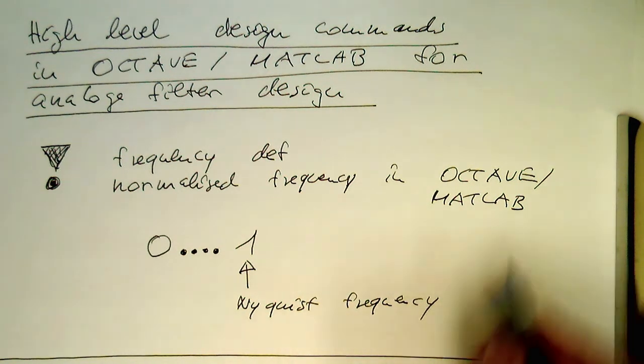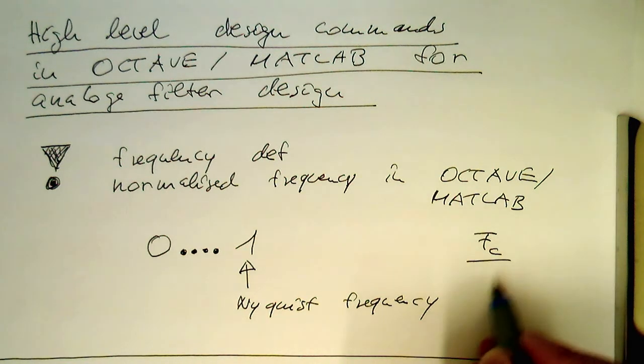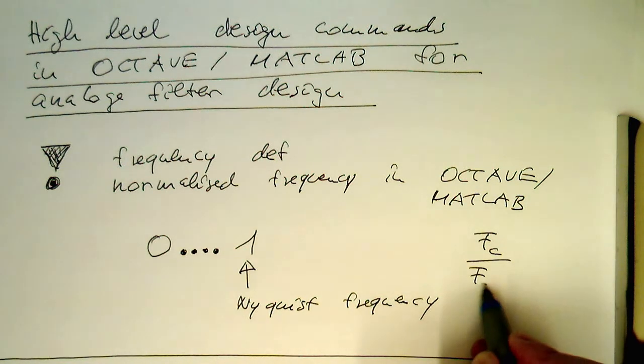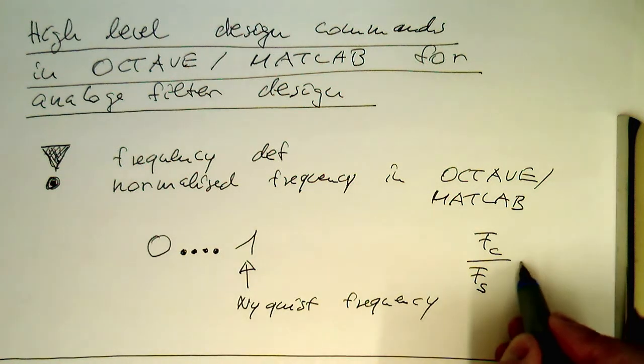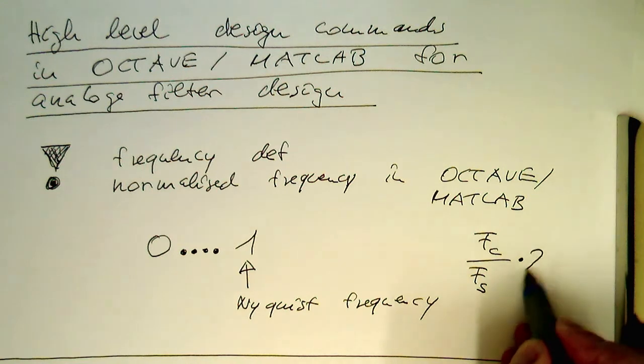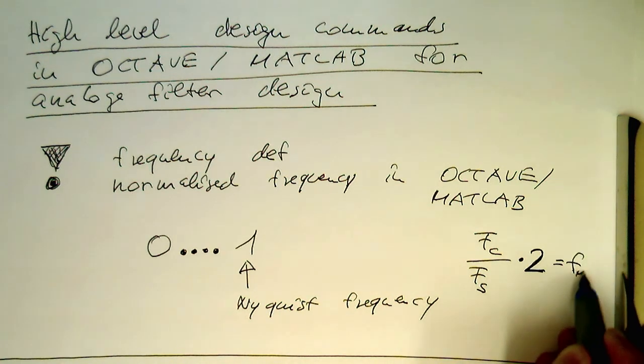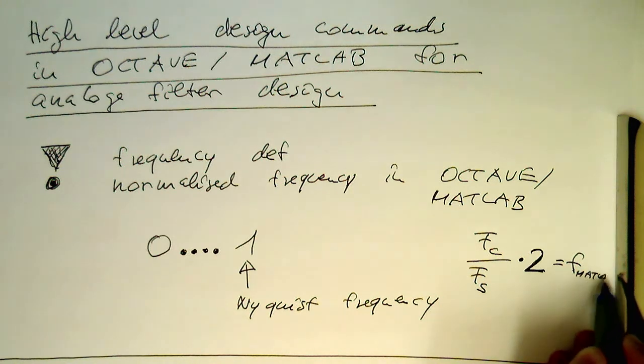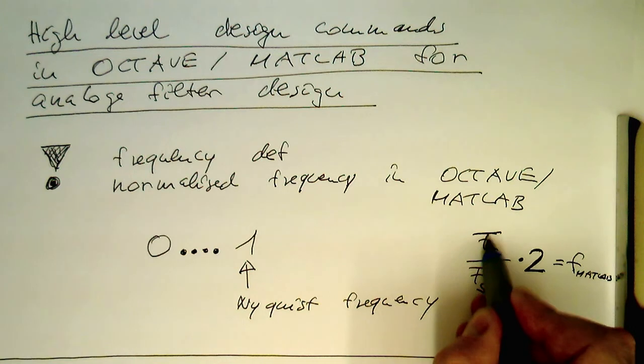So this means if we have an analog Fc and we divide this by our sampling rate, then we get into this term here by multiplying by Factor 2 to get the FMATLAB. This gives us then this Factor 2.